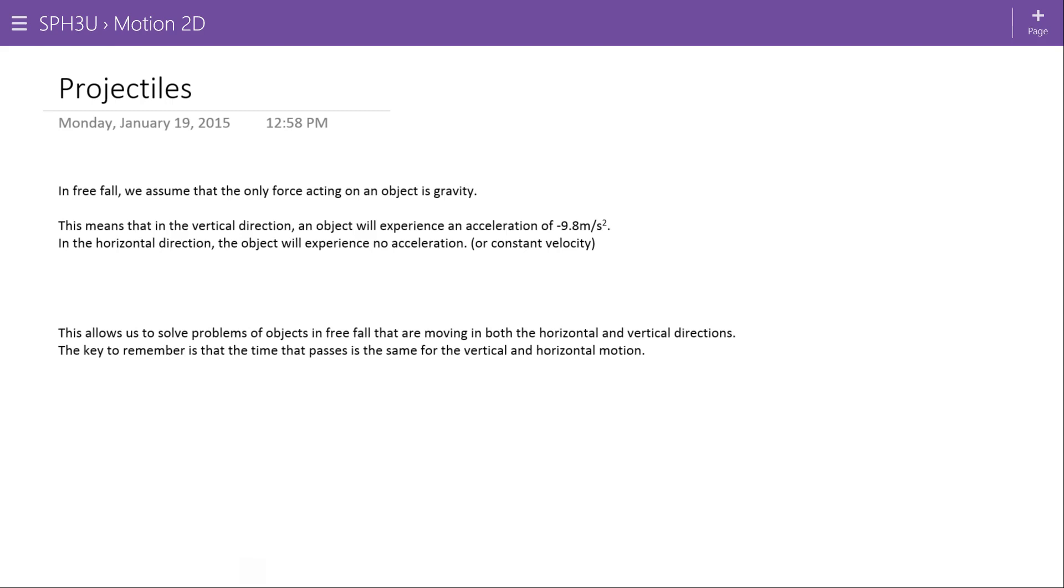Specifically we're talking about objects that are moving both horizontally and vertically through the air, and we're making that basic assumption that we made before as well, that the only significant force acting on the object is gravity. So assuming in the horizontal direction that there's no serious forces, and in the vertical direction all that we have is the force of gravity, and again that's going to lead to an acceleration of negative 9.8 meters per second squared.